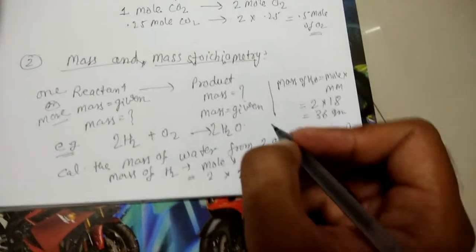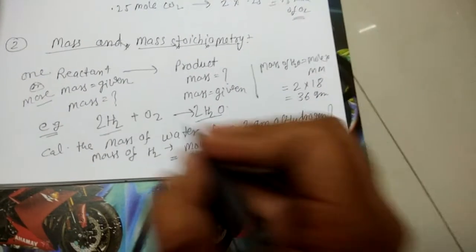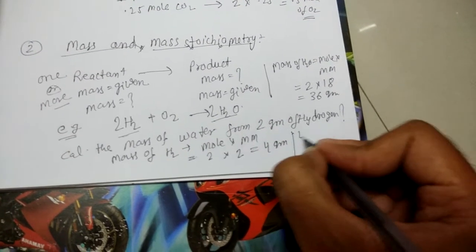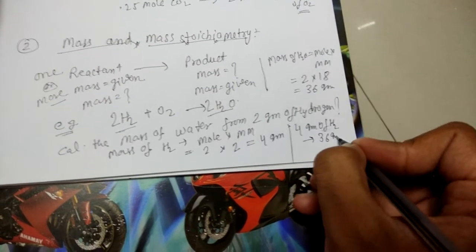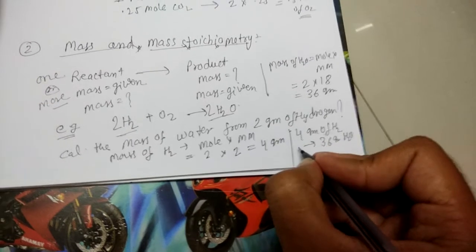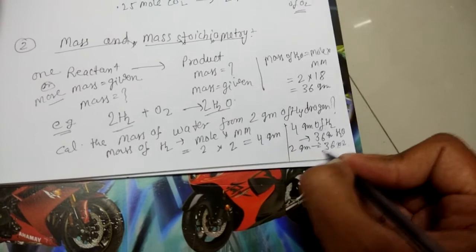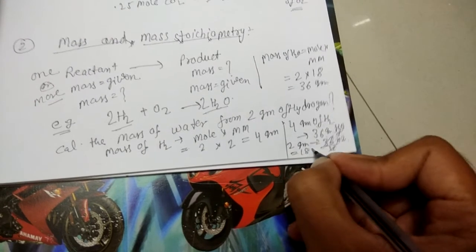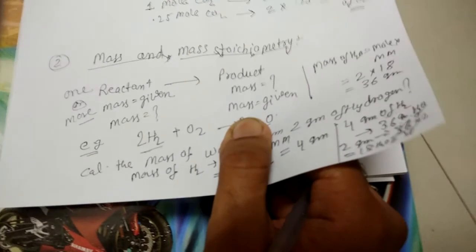Now in the exact reaction, 4 gram of hydrogen gives 36 gram of water. Then 2 gram of hydrogen gives 36 into 2 upon 4, which is 18 gram of water. So you see friends, in mass and mass stoichiometry we calculated the mass of product.